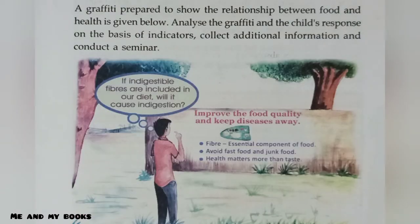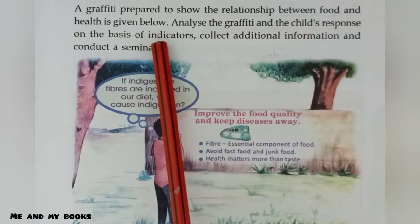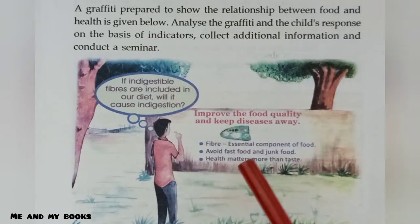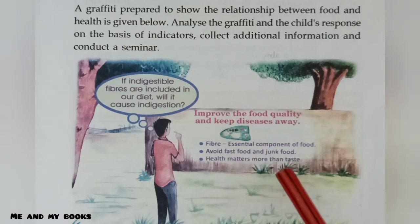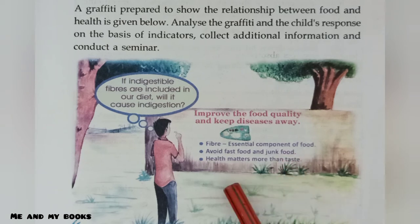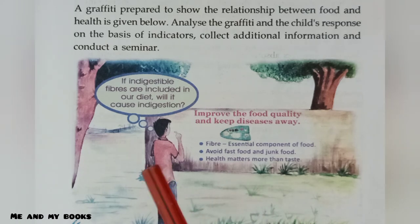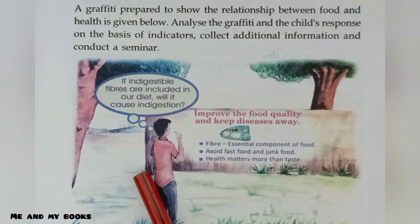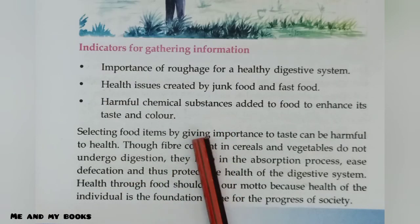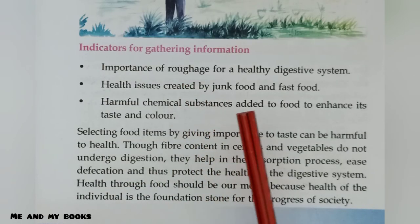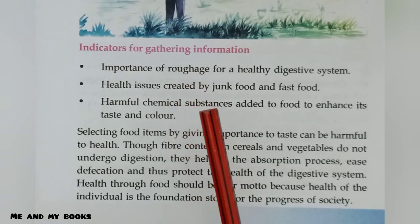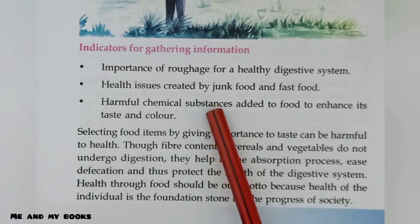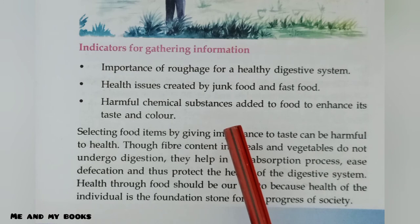Observe this figure showing a graffiti with the message: improve food quality and keep diseases away. Fiber is an essential component of food. Avoid fast food and junk food — health matters more than taste. If indigestible fibers are included in our diet, will it cause indigestion? Fiber is indigestible, but it does not harm digestion. Roughage means fiber, and it is important for a healthy digestive system. Junk food and fast food create health issues, and harmful chemical substances are added to food to enhance taste and color.